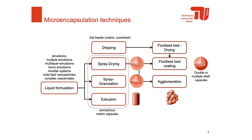For example, we deal with emulsions, multiple emulsions, multi-layer emulsions, microemulsions and micellar systems, solid lipid nanoparticles, or complex coacervates. The predominant technique for conversion of those systems into microcapsules is spray drying, spray granulation, or extrusion. At least when talking about food, we mainly use starch conversion products as the bulk matrix forming material, and thus we end up with an amorphous solid-like capsule.